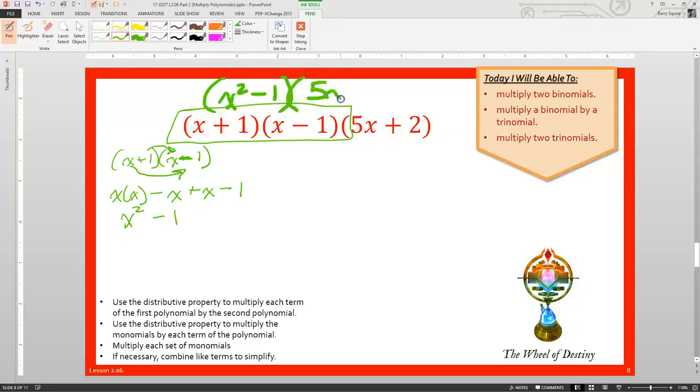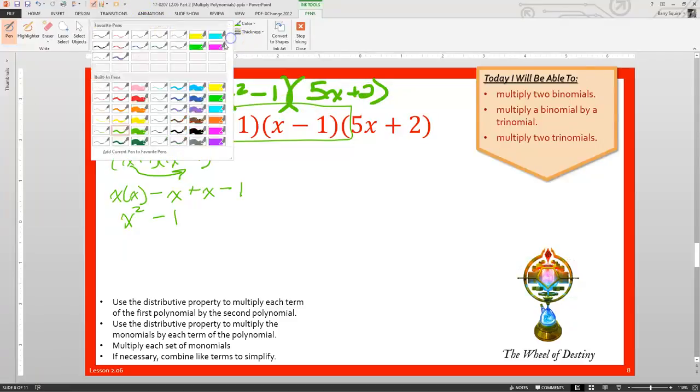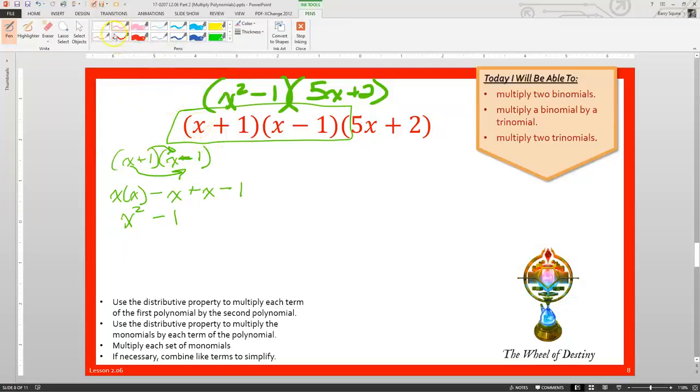So now we're going to multiply that by our 5x plus 2. Let's see, do it with, oh, why not pink? Why not? So we have our x squared minus 1 times 5x plus 2. Same process, everything in here gets multiplied by everything in here. So we'll try and stay organized. We will say x squared times 5x plus x squared times 2, then we do minus 1 times 5x and minus 1 times 2.